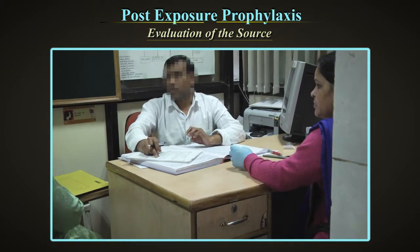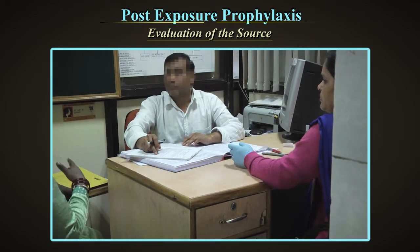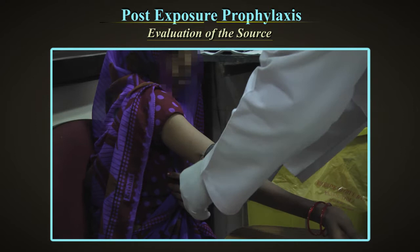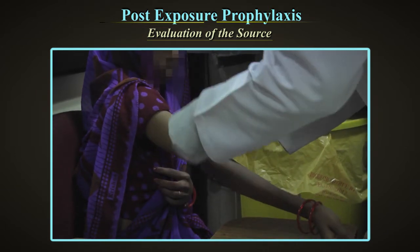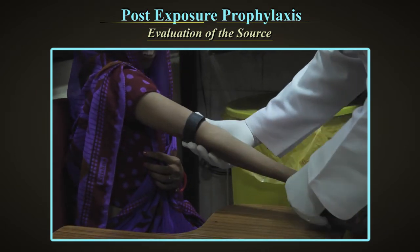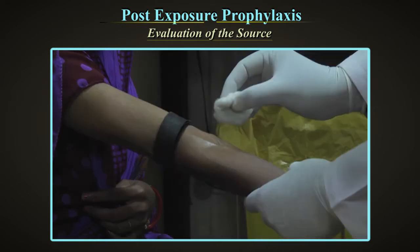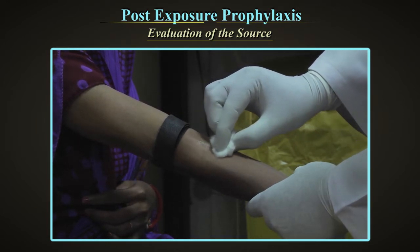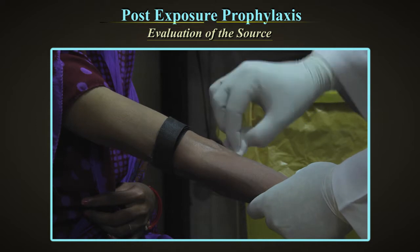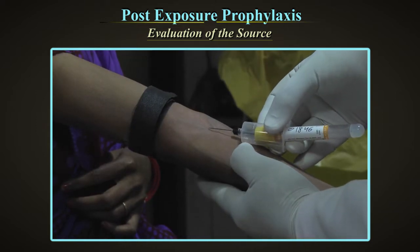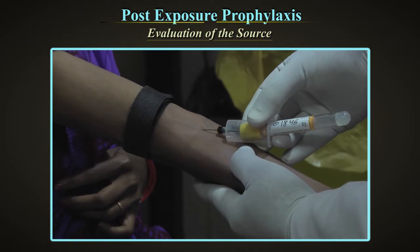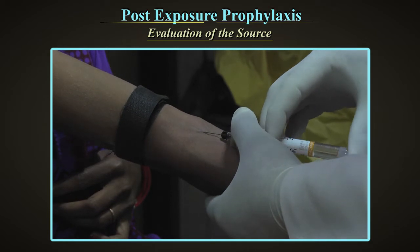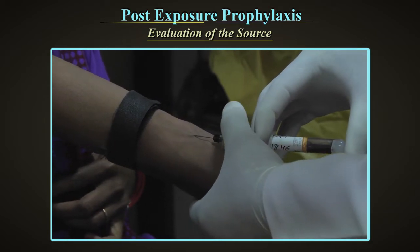If the status of the patient is unknown and the patient is available, they are to be counselled and consent obtained. If the patient refuses testing but a blood sample is available, it is the right of the exposed person that the blood sample be tested, though the source patient may decline to be informed of the result. If the patient refuses counselling and testing and no blood sample is available, the exposed person may still request blood be taken for testing.